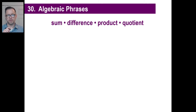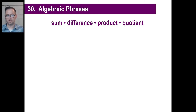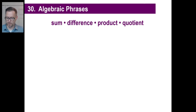First off, make sure you know these four words. Sum, which is the answer to an addition problem. The difference is the answer to a subtraction problem. The product is the answer to a multiplication problem. And a quotient is the answer to a division problem. Just make sure you can differentiate those when you see these sentences written for you.